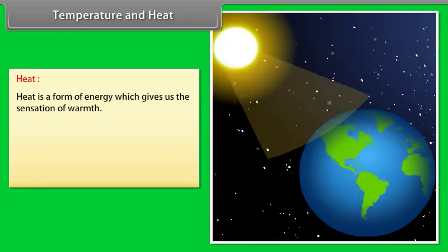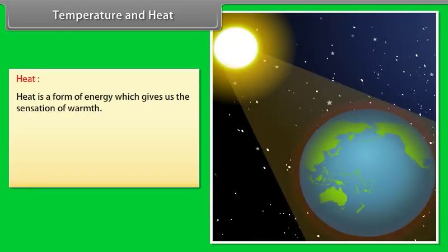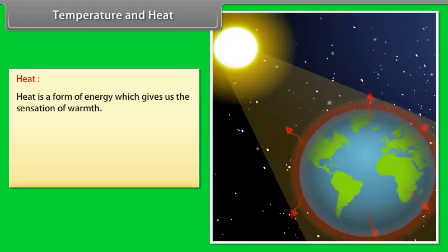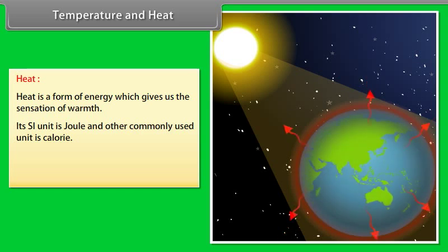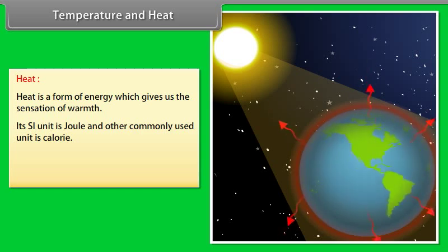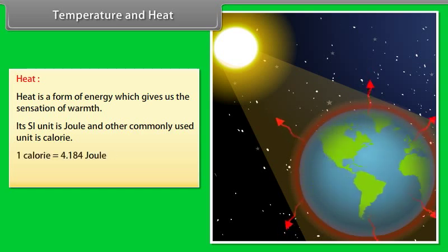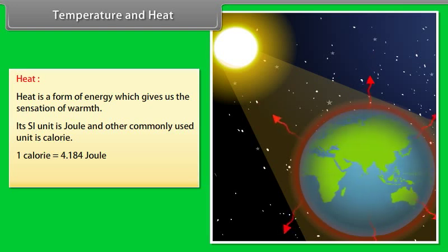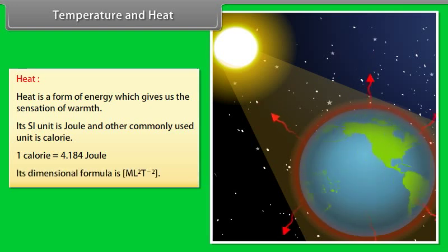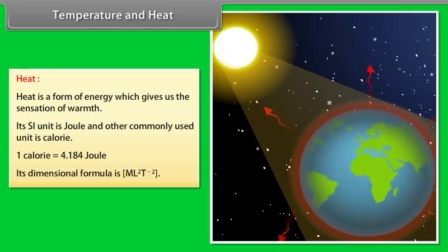Heat is a form of energy which gives us the sensation of warmth. Its SI unit is Joule and another commonly used unit is calorie. One calorie is equal to 4.184 Joule. Its dimensional formula is ML²T⁻².